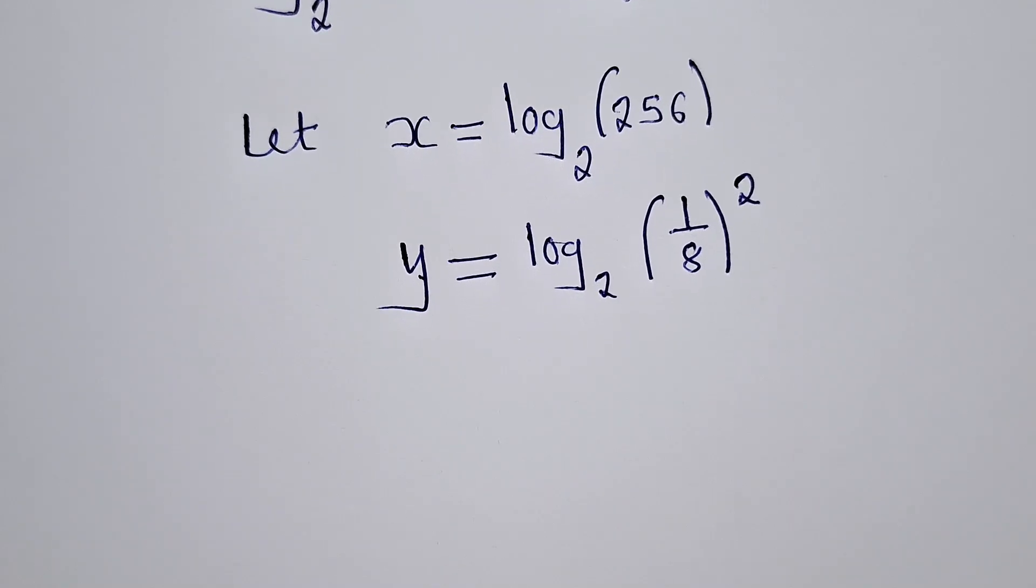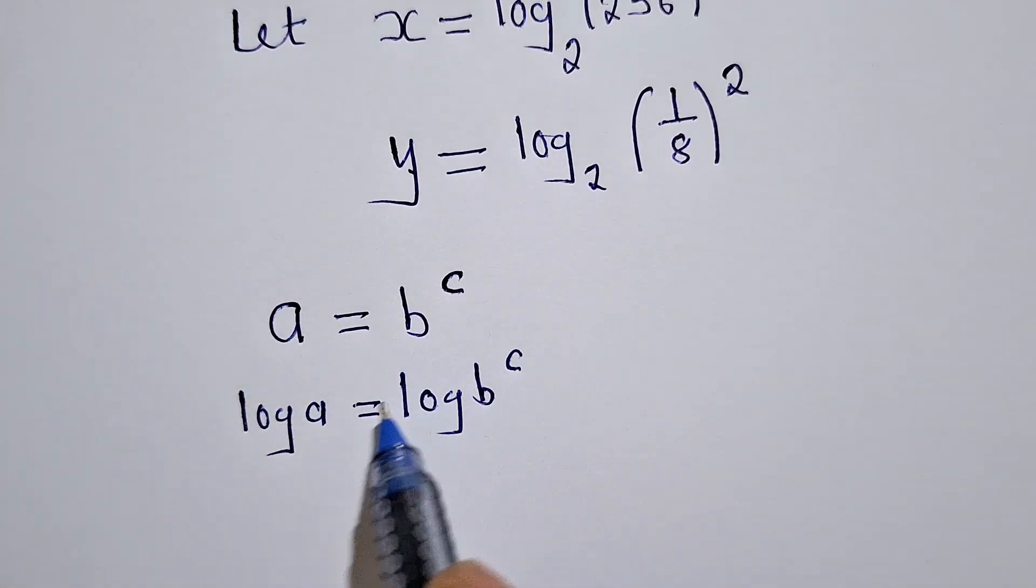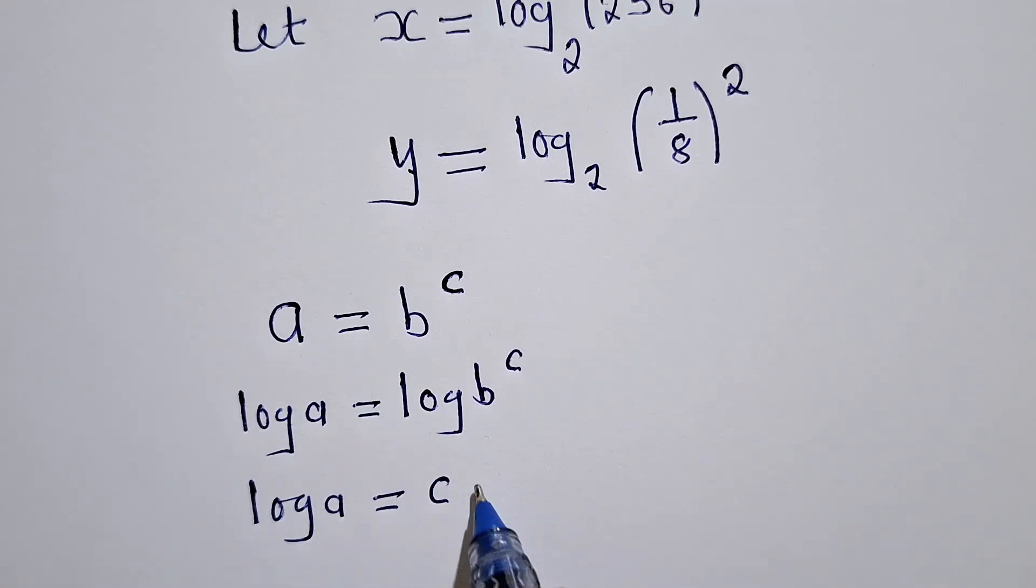So there is a most important property which we need to use, which says that when you've got a is equal to b power c, we apply the logs. We can say log a is equal to log b power c, of which this power will come in front right here. And this will be log a is equal to c log b.